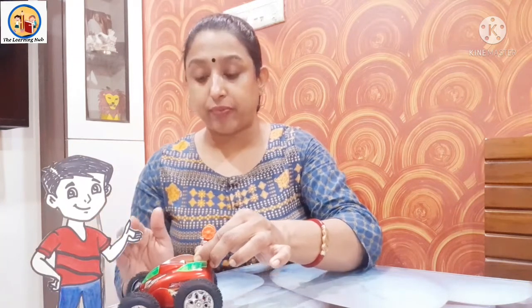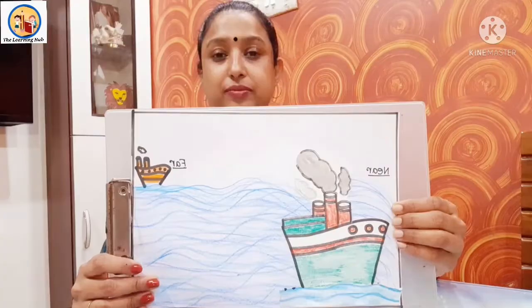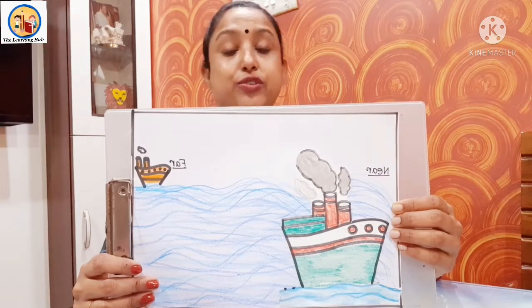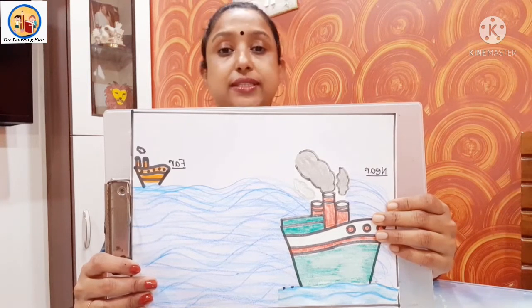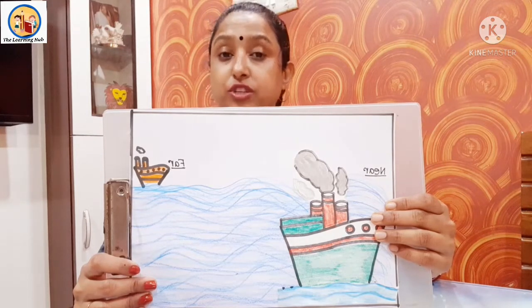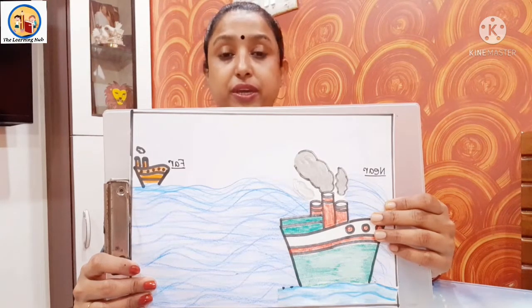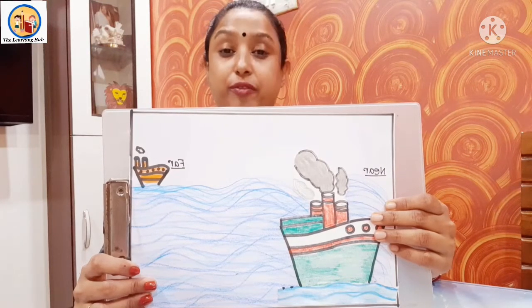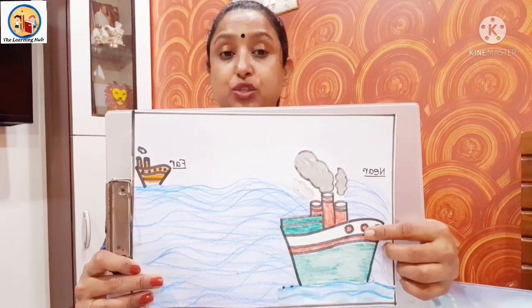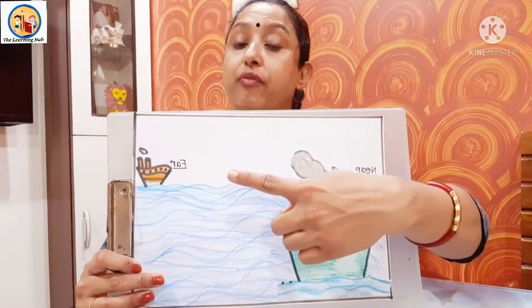Now this car is at short distance. Now this car is far from the boy — ye car boy se bohat door hai. Now the next example. Everyone look at this picture. This is a picture of a sea and here we can see two ships. Observe the picture and tell me which ship is near to us and which one is far from us. Very good — this ship is near to us and that one is far from us.